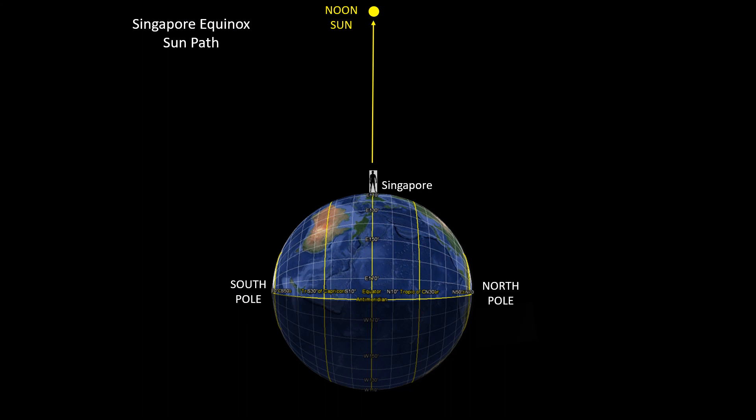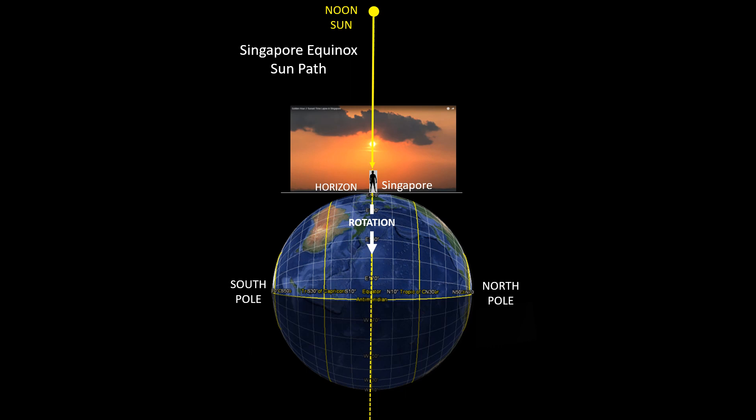So I'm going to use the equinox when the Sun is directly above the equator. And of course when you are in Singapore that means that the noon Sun is directly overhead. And on the equinox the Sun path is also in alignment with the equator. So when you add in Earth's rotation this explains why you see a Sun setting perpendicular to the horizon when you are in Singapore.